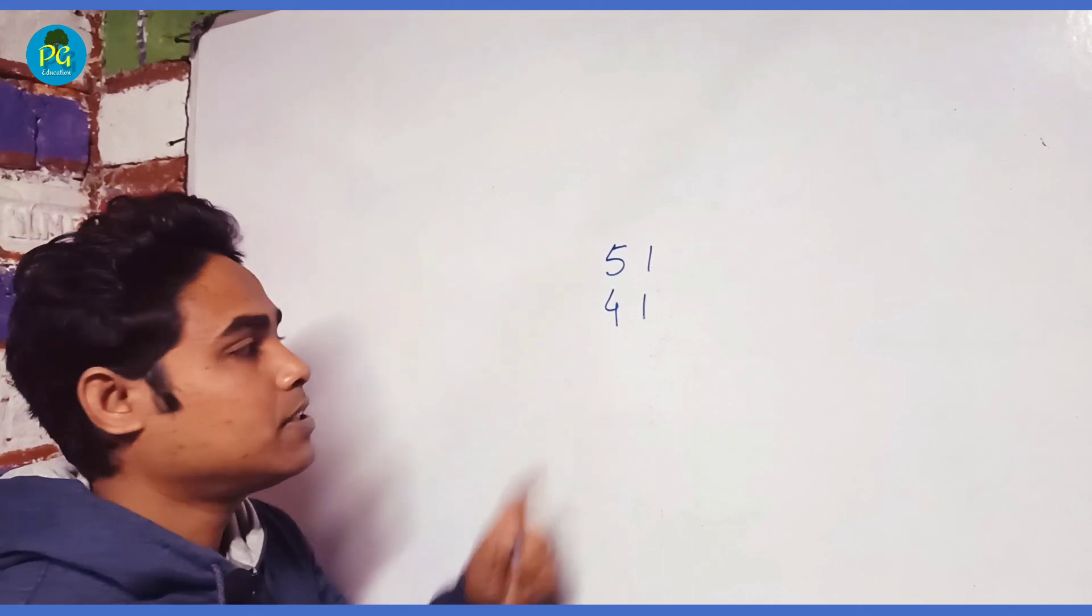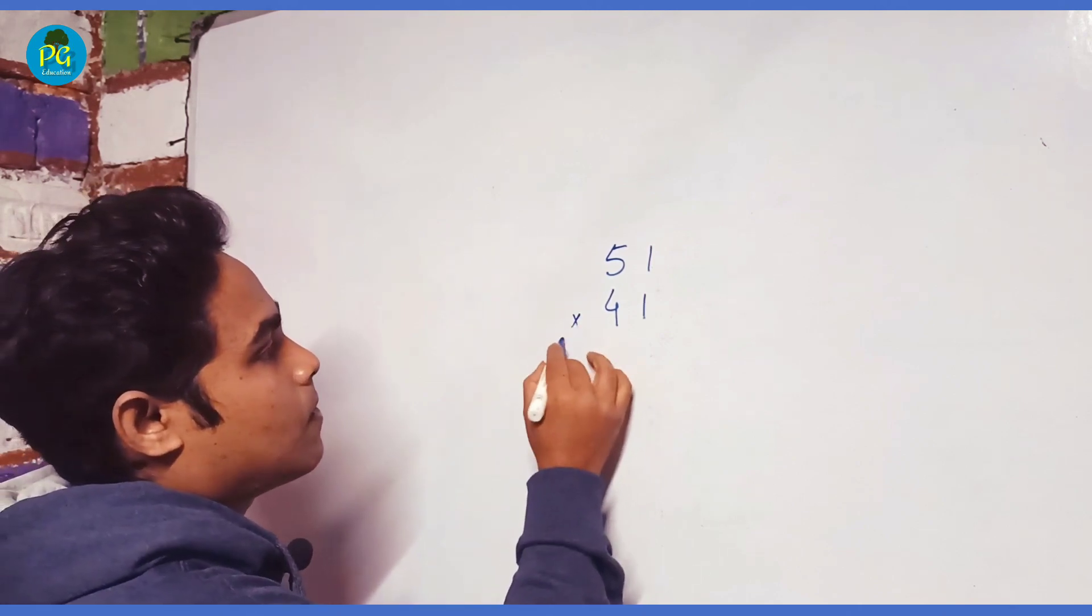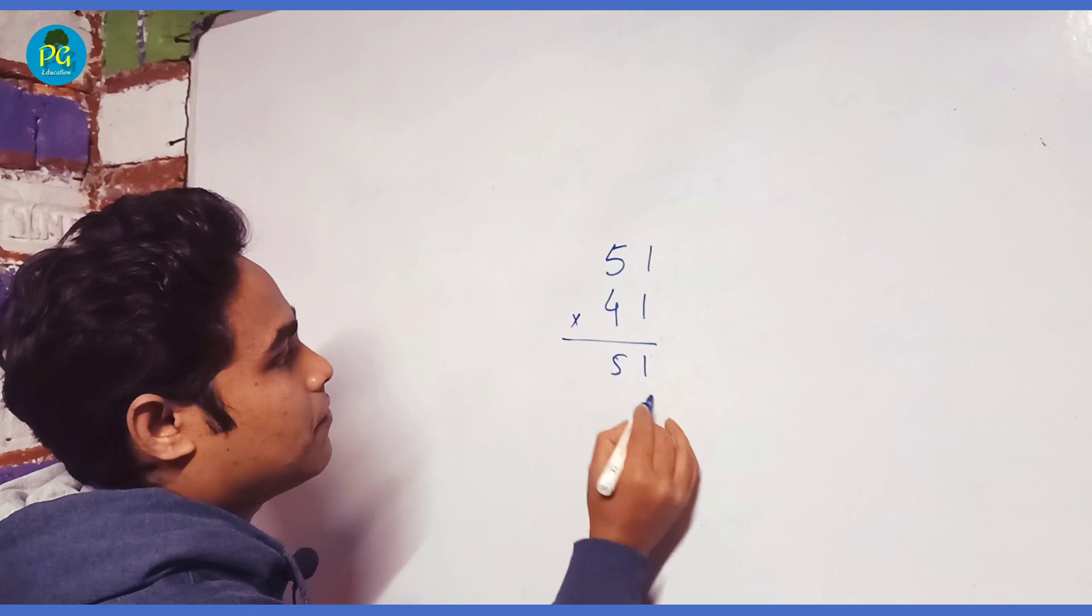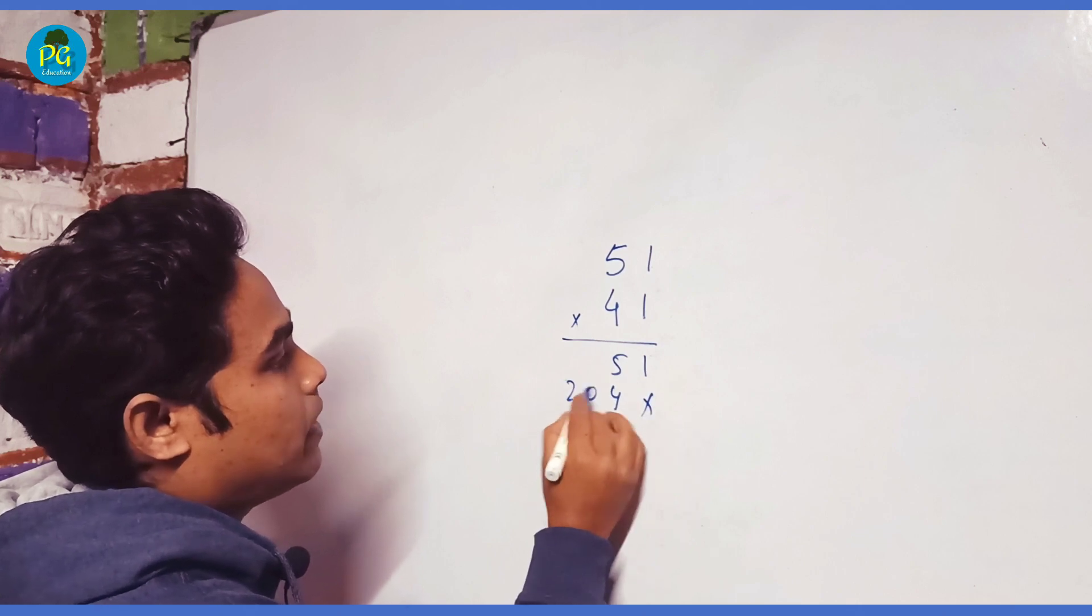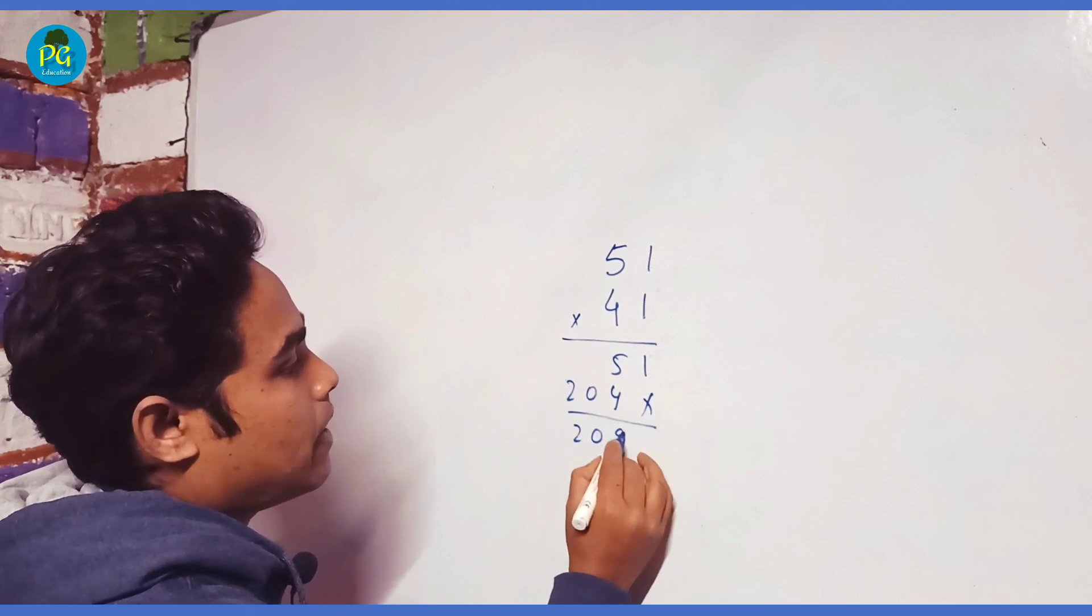If I ask you to multiply these numbers, you will do this: 1, 5, then 4, 20, it will be 2, 0, 9, 1.